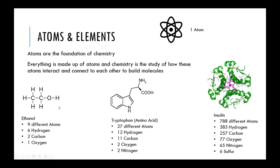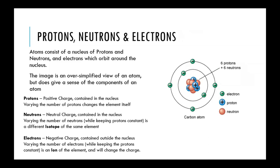One molecule of ethanol contains nine different atoms, while one molecule of the protein insulin contains 788 different atoms.